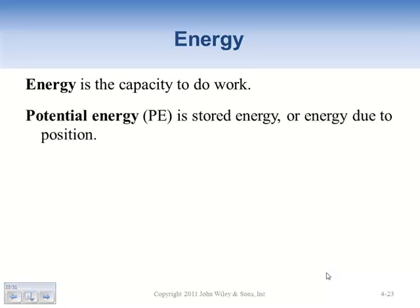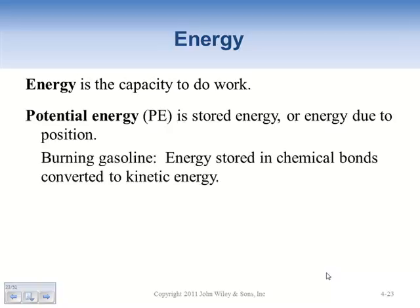The first main type of energy is called potential energy - it's the stored energy, the energy due to position. When you have a book up on a shelf, it has potential energy; it can fall down. You're storing energy by its position. A rock on top of a mountain has potential energy - give it a push and it rolls down. In chemistry, chemical energy is stored energy in the molecule.